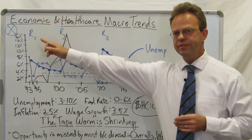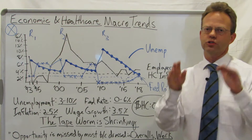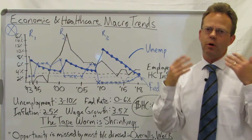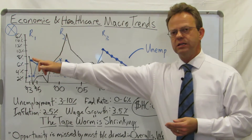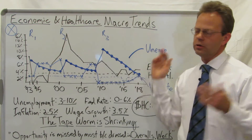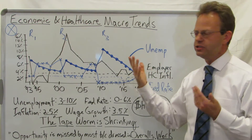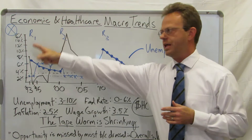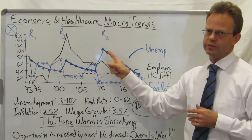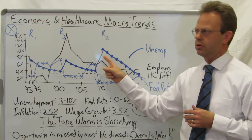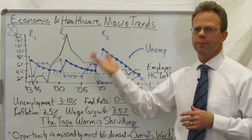At the top I have R1, R2, and R3 — those are the three most recent recessions. The dotted line is unemployment. As you can imagine, when each recession happens, unemployment goes up, and then it steadily declines before it bumps back up again.